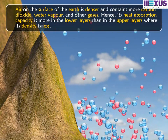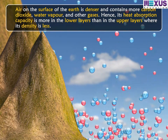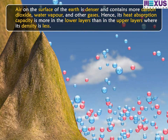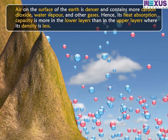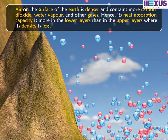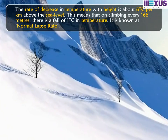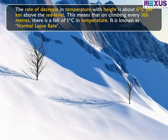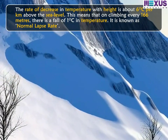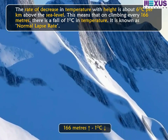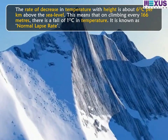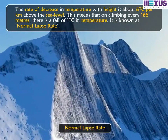Air on the surface of the Earth is denser and contains more carbon dioxide, water vapour, and other gases. Hence, its heat absorption capacity is more in the lower layers than in the upper layers where its density is less. The rate of decrease in temperature with height is about 6 degrees Celsius per kilometer above sea level, meaning that on climbing every 166 meters there is a fall of 1 degree Celsius. This is known as the normal lapse rate.